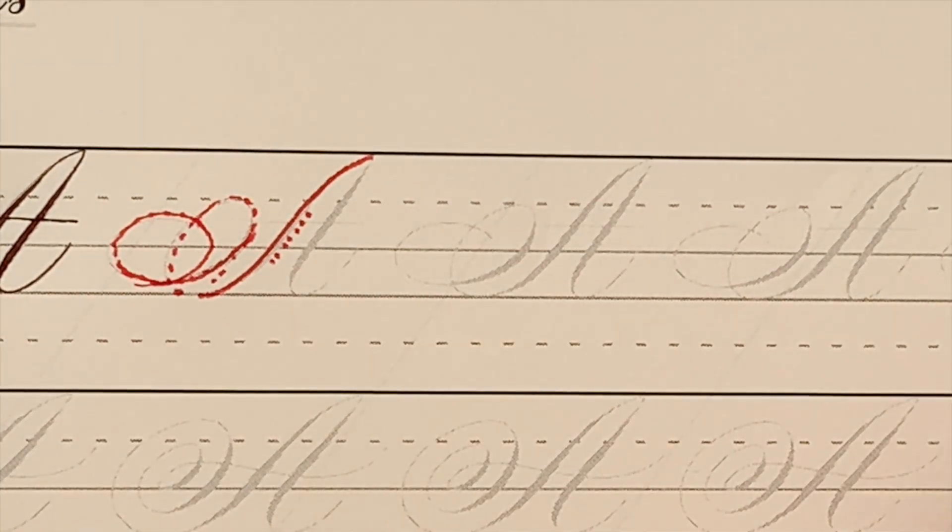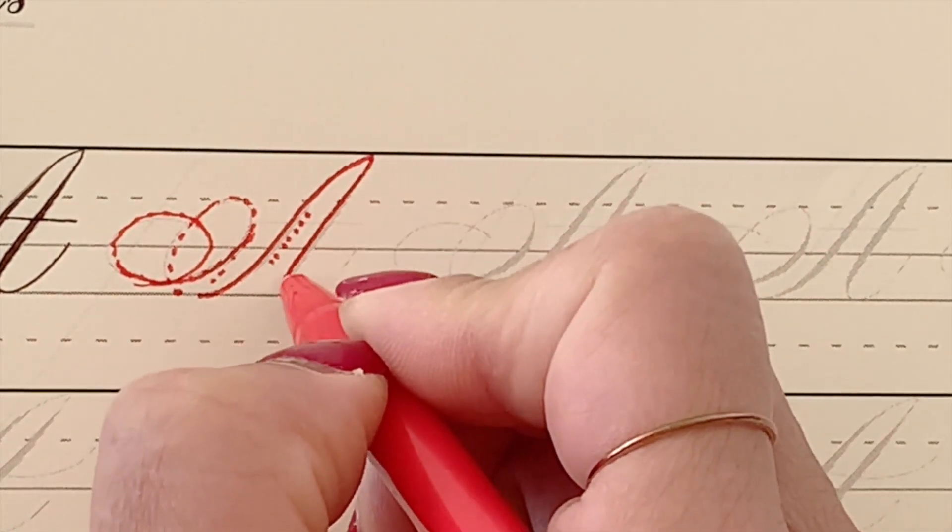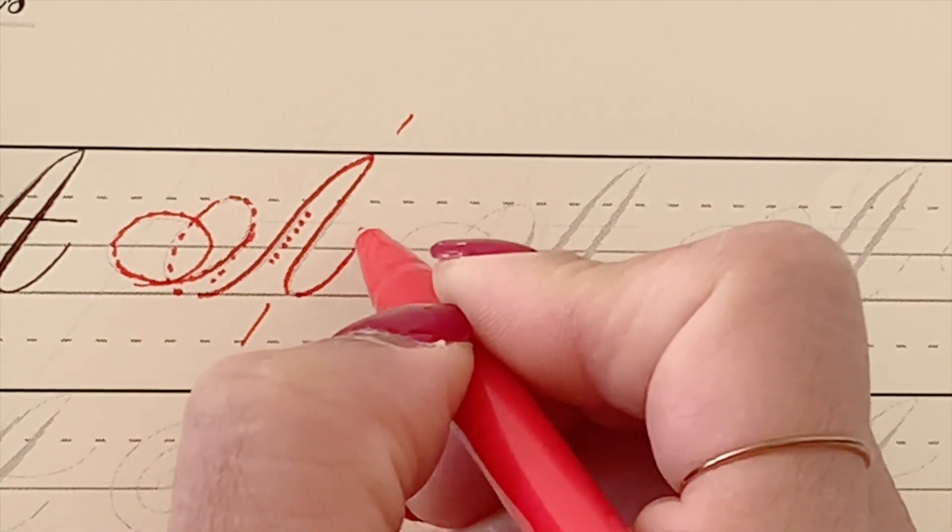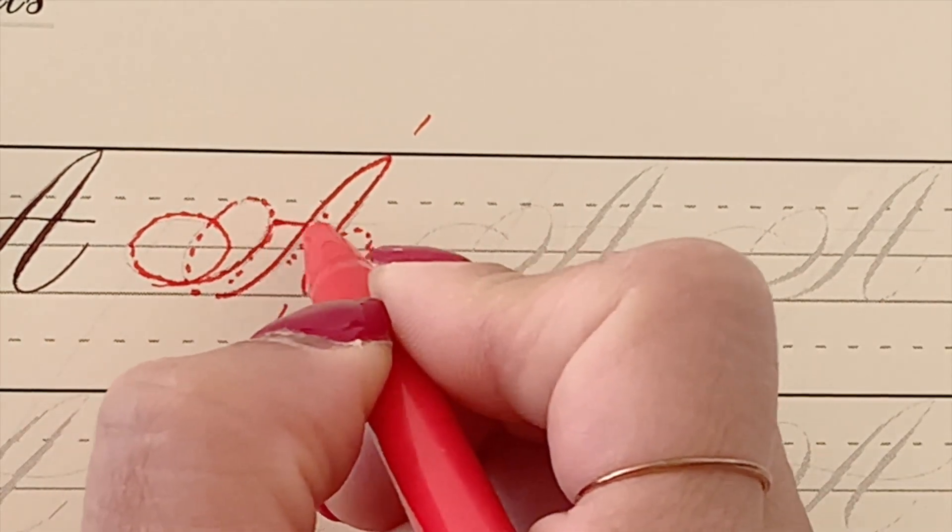What I call a horizontal oval. Now coming down, make sure that you're parallel on the slant. And exit, also forming an oval, and then a crossbar.